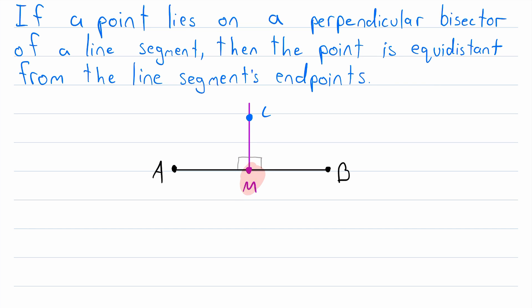Then since this is the midpoint of the line segment AB, by definition, the line segment AM is congruent to the line segment BM, since M is the middle of that segment. So this segment is congruent to this segment.